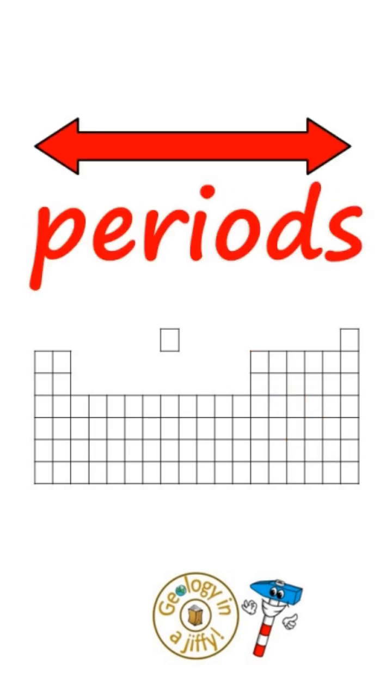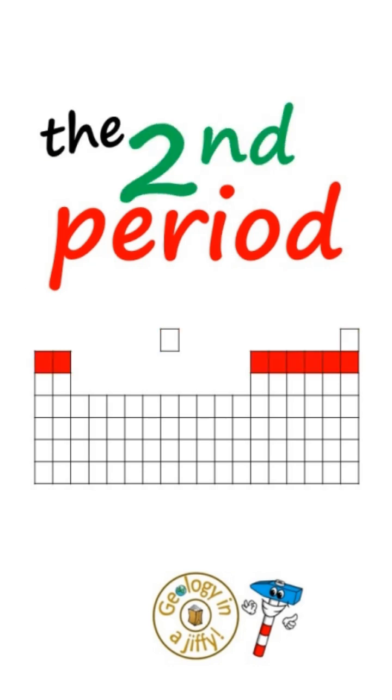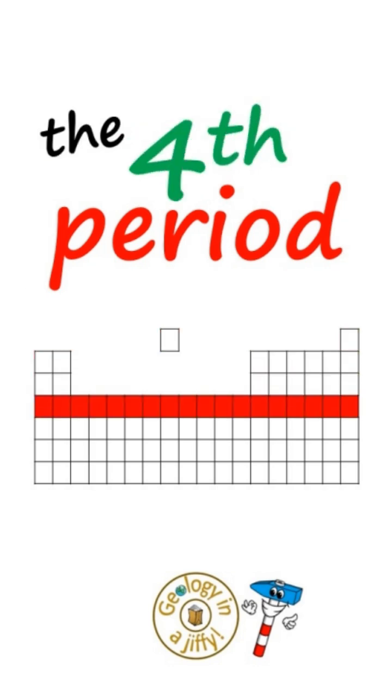The sideways rows are called periods, with the top row being the first period, then the second period, the third period, the fourth period, etc.